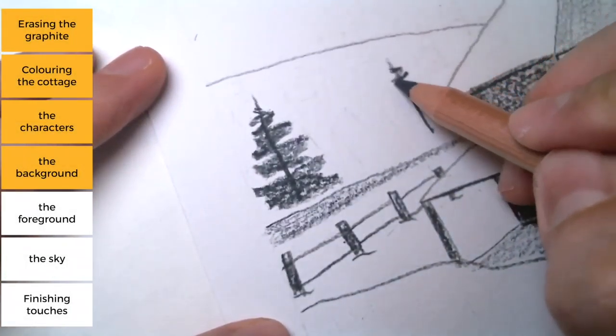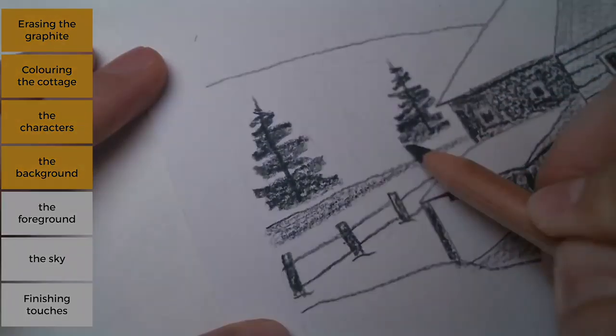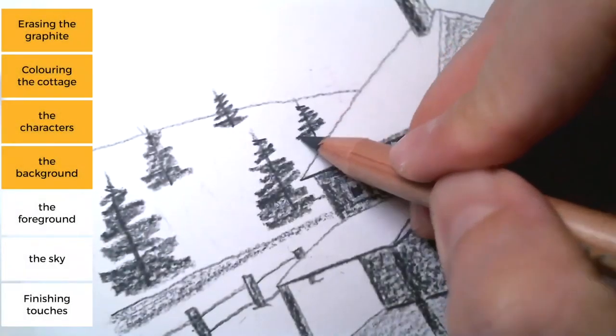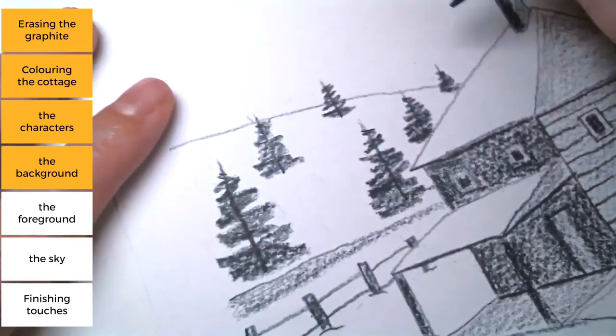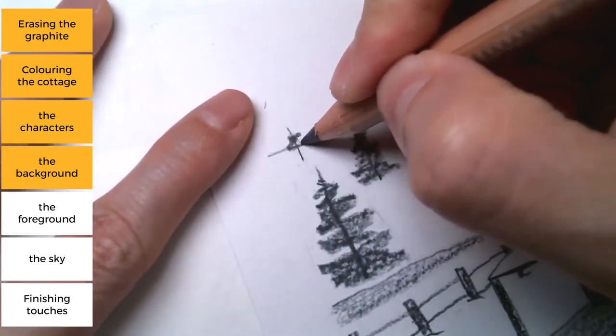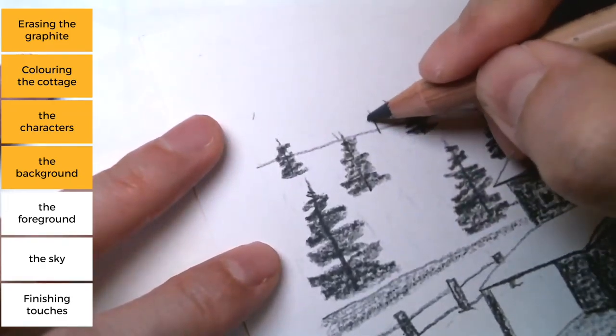Another one there. So as we go farther and higher up, the trees would look smaller and would have fewer strokes.